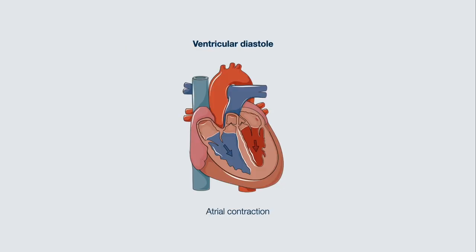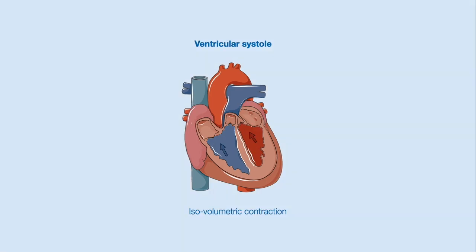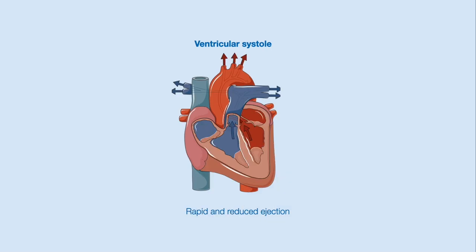The atria contract to fill the ventricles. After atrial contraction, the ventricles undergo isovolumetric contraction, causing ventricular pressures to rise above atrial pressures, and this causes closure of the AV valve, which is responsible for the first heart sound, lub. The ventricle then contracts and pressures rise above vascular pressures, causing the semilunar valves to open, resulting in rapid and reduced ejection of blood into the pulmonary arteries and aorta.